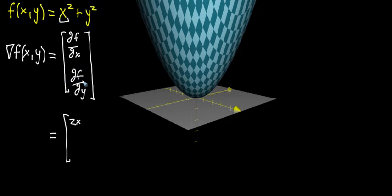When you take the partial derivative with respect to y, things reverse. It looks at the x component and says you look like a constant, so your derivative is zero. But it looks at the y component and says you look like a variable, so your derivative is 2y.